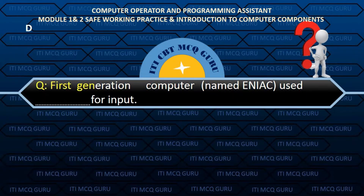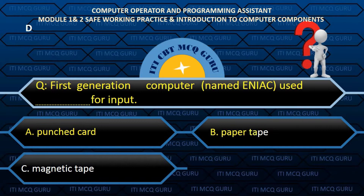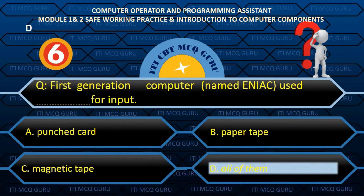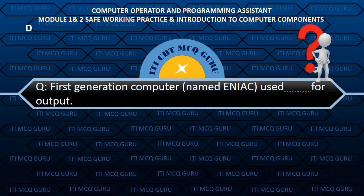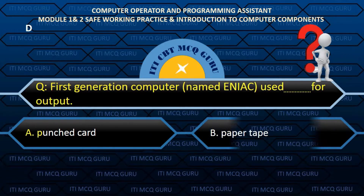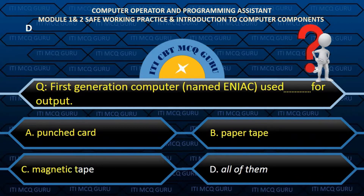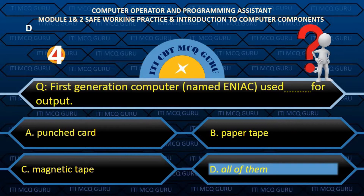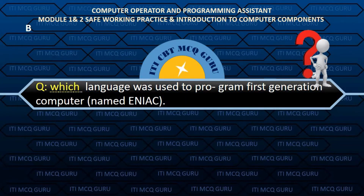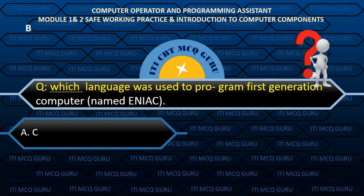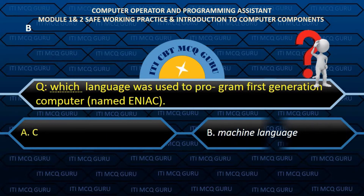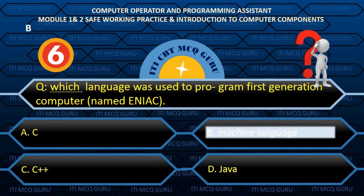First generation computer named ENIAC used — for input — Answer: D. All of them. First generation computer named ENIAC used — for output — Answer: D. All of them. Which language was used to program first generation computer named ENIAC? Answer: B. Machine language.